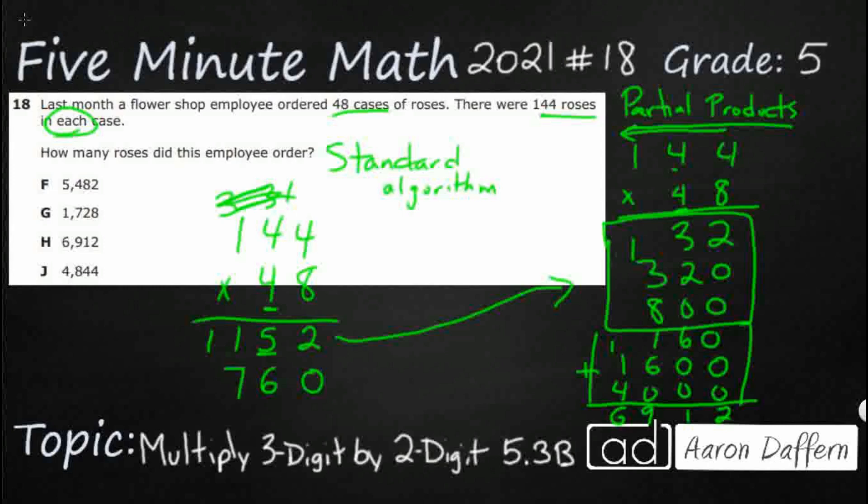We're going to carry that 1. We scribble these out so we don't get confused. And 4 times 1 is 4. Add that 1 back in as 5. And this is what we get. 2, 11, 9, 69, 12. And this right here, 5,760, is the sum of those 3 products. Our answer is H.